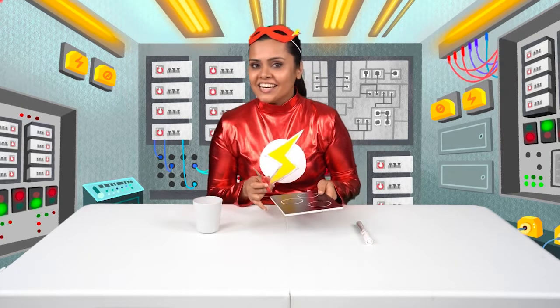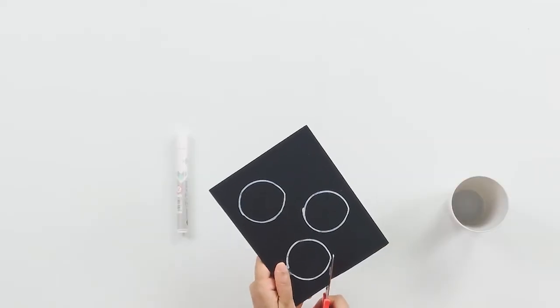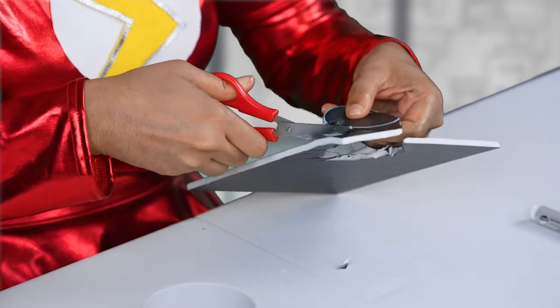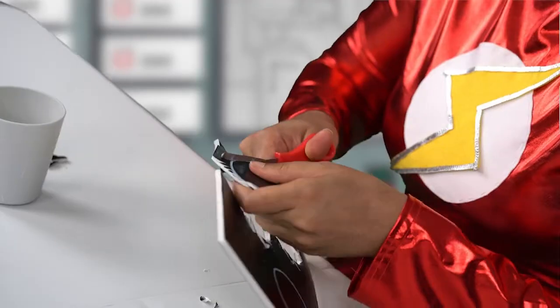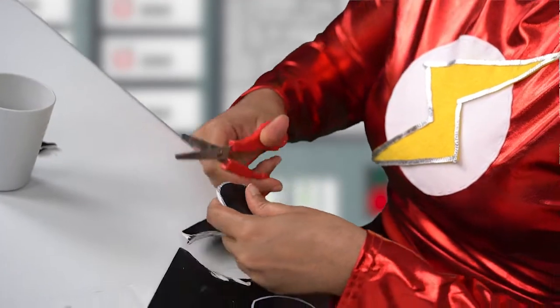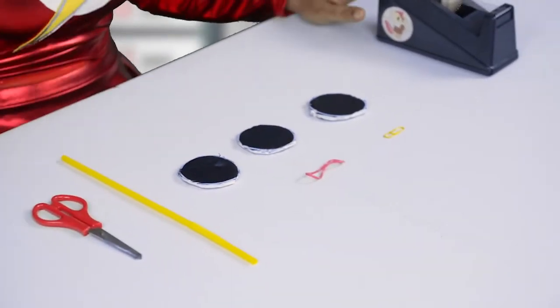Grab your scissors and your adult, and let's get cutting! Alright. Now, don't worry if your foam board kind of bends and cracks a little. That's okay. So now we have our three circles in front of us.